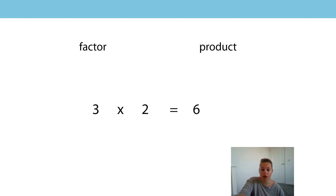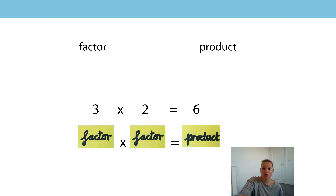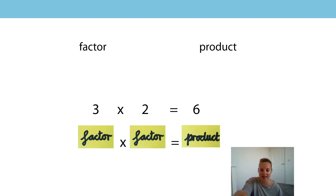You might want to pause the video while you say this out loud. That's right — three and two are the factors and six is the product. A factor times a factor is equal to the product. Can you say that sentence for me? A factor times a factor is equal to the product. And the product is equal to a factor times a factor. I'll say that sentence again and I'd like you to repeat it. A factor times a factor is equal to the product. And the product is equal to a factor times a factor. Fabulous, well done.